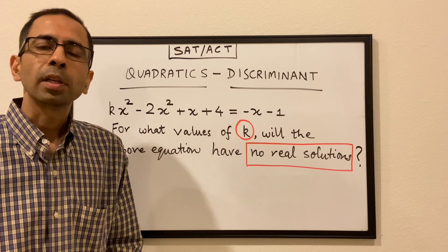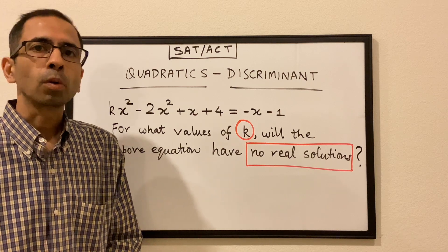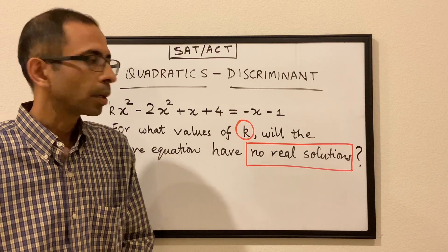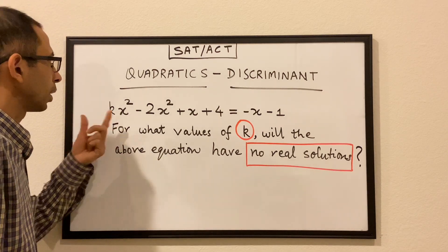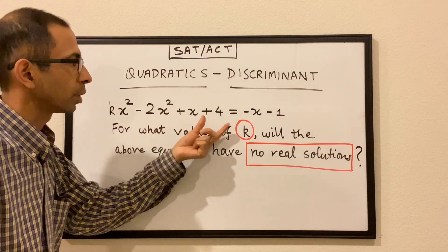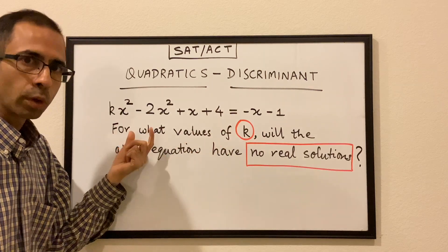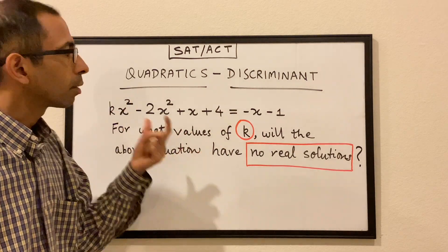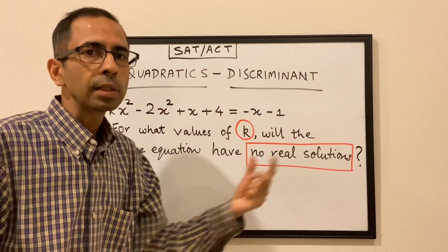Hello all, welcome to the 7th session of the SAT series. In this episode we are going to talk about quadratics, especially in the context of discriminants. So let's say we have this equation: kx squared minus 2x squared plus x plus 4 is equal to minus x minus 1. This is the equation given of a quadratic function and we have to find the values of k for which this equation will have no real solutions.